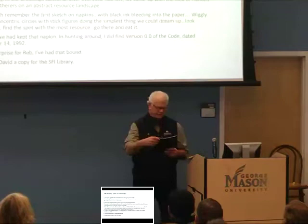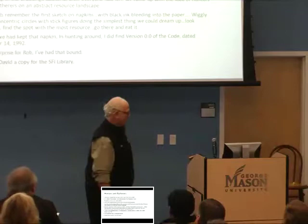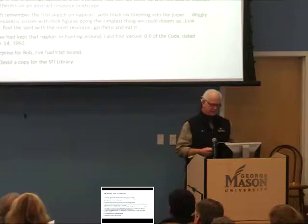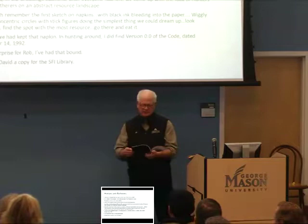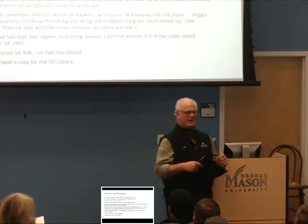What are they going to do? Literally the simplest thing we could dream up was: look around, find the spot with the most resource, go there and eat it. I wish we'd kept that napkin. But in hunting around, I did find version 0.0 of the code, nicely reproduced and bound. It's dated October 14, 1992 — Robert Axtell and Joshua Epstein, version 0.0. It wasn't called SugarScape or anything; it was just called 'Hunters' at that point.